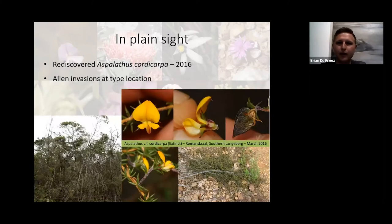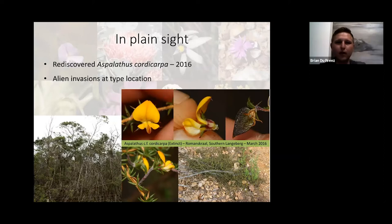Another interesting find on the other side of the mountain is Spallitus cordycarpa, a very small-flowered pea. The type locality had been completely invaded by alien black wattle and it wasn't seen since the 1950s. One of our best Cape botanists, Jan Vlok, had gone on several occasions to look for it and couldn't relocate it, so it was listed as extinct. But just 20 kilometers to the east, it is literally a weed on the mountain — very prolific, and glad to say it is no longer extinct.